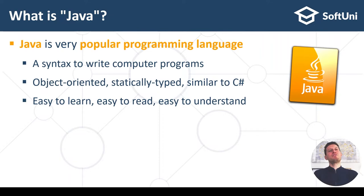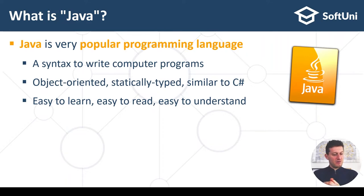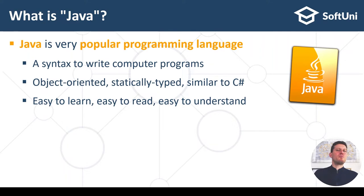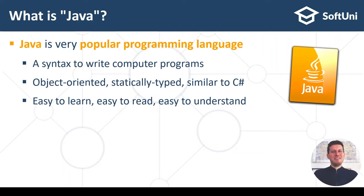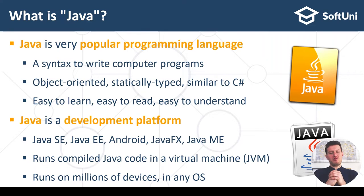Java is object-oriented, which means it's based on classes, methods, and properties. It's statically typed, which means variables have a fixed type that cannot be changed at runtime. It is similar to C#, though most people believe C# is better — but that's another story. Java is easy to learn, easy to read, and easy to understand. You don't need to know much in order to read a Java program.